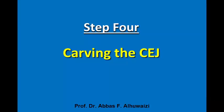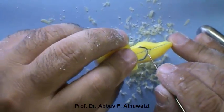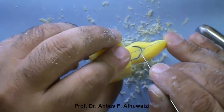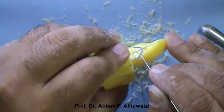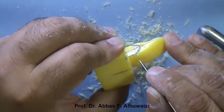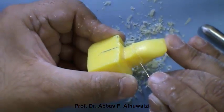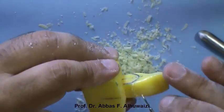Step 4: Carving the cemento-enamel junction. By the use of a sharp instrument, we carve the shape of the cemento-enamel junction labially, proximally, and palatally.